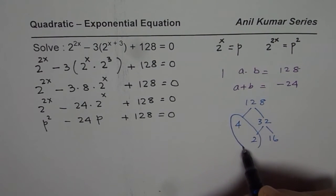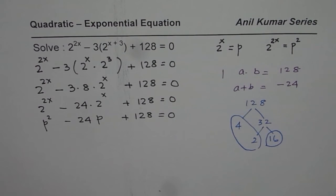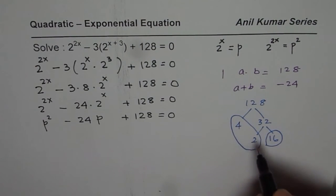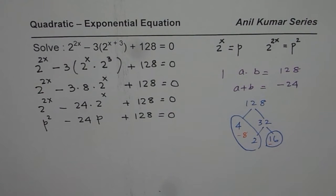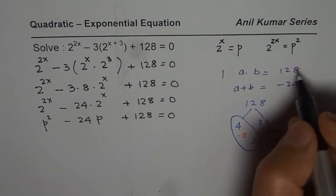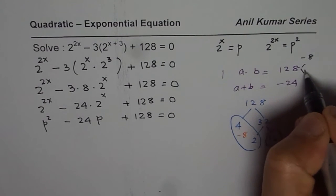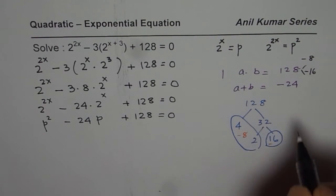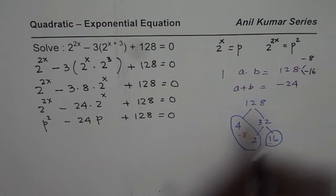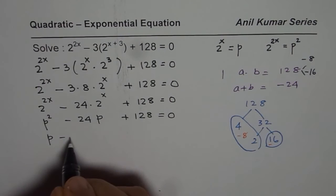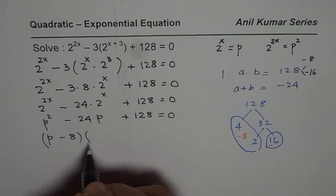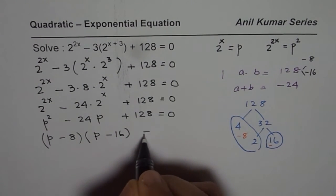So if I combine these two I get minus 8 and this is minus 16. If I add minus 16 and minus 8 I get minus 24. Therefore I know that my magic numbers are minus 8 and minus 16. When you add them you get minus 24. When you multiply you get 128. So we can factor this as p minus 8 times p minus 16 equals to 0.